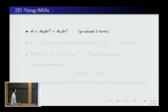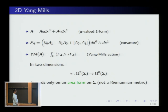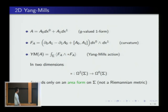For 2D Yang-Mills, the basic field is a G-valued 1-form, a connection. Working on R² for now, the curvature is given by the standard expression. The Yang-Mills functional is just the L² norm of the curvature. In two dimensions, you need to specify an area form: the Hodge star in two dimensions depends only on an area form. You take your 2-form, divide by the area form to get a function, pair with curvature, and integrate the resulting top form. That's the Yang-Mills action.